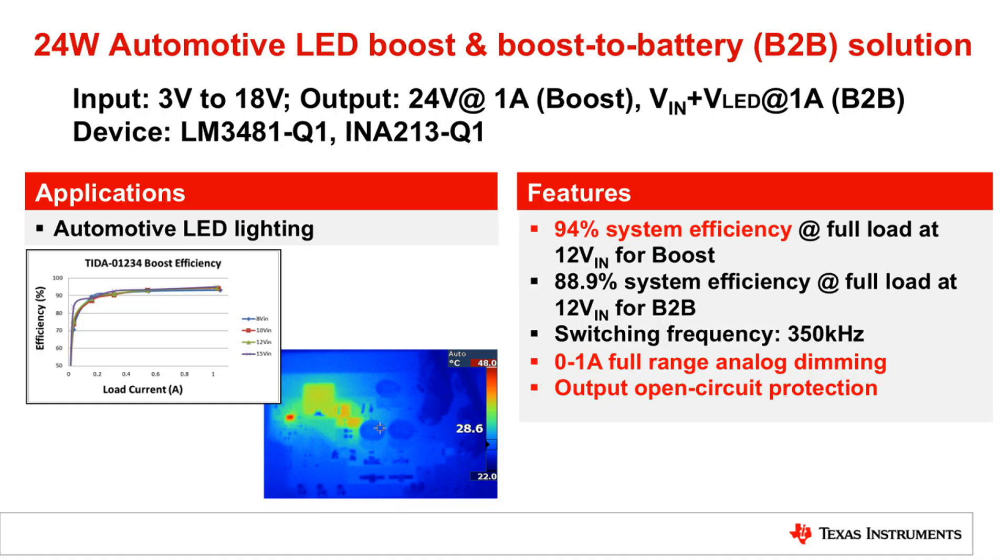So this design was designed for 3 volts to 18 volts. There's two configurations: there's a boost configuration which goes up to 24 volts, and a boost-to-battery configuration that goes to 12 volts. We designed this to be as high efficiency as possible, up to 94% is attainable. The input dimming range is from zero to one amp, and we've also added some protection circuitry for open circuit conditions.